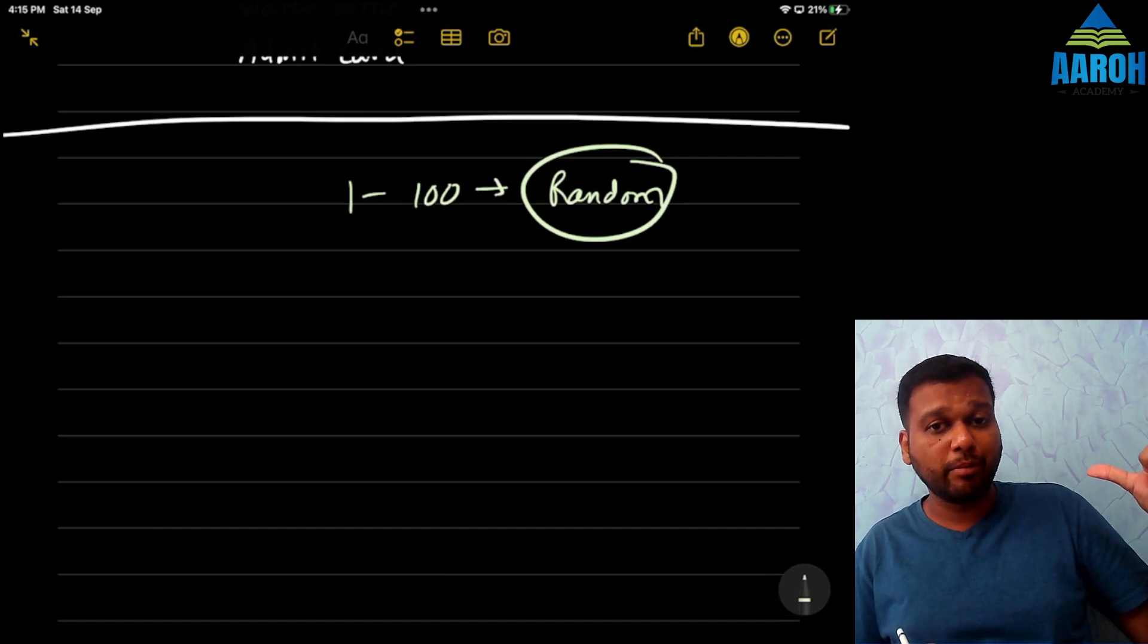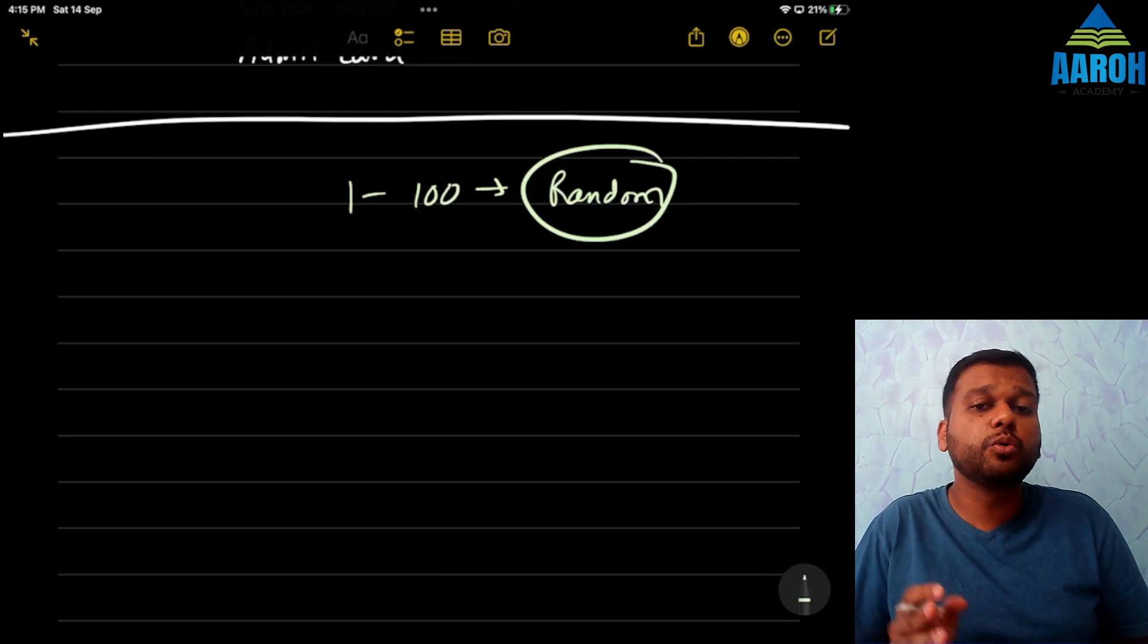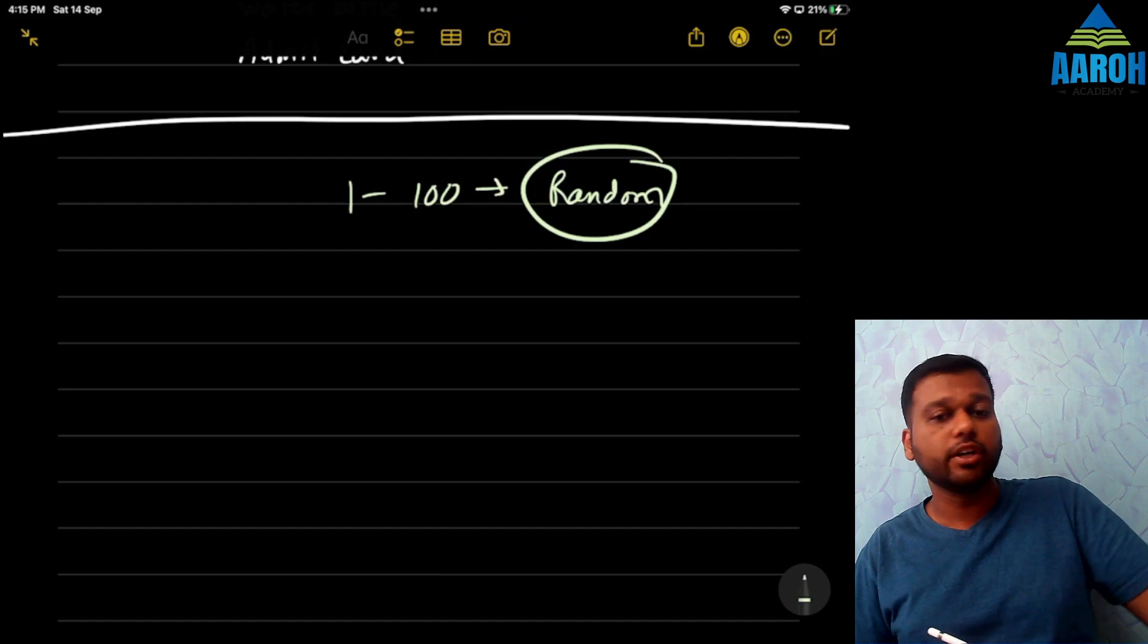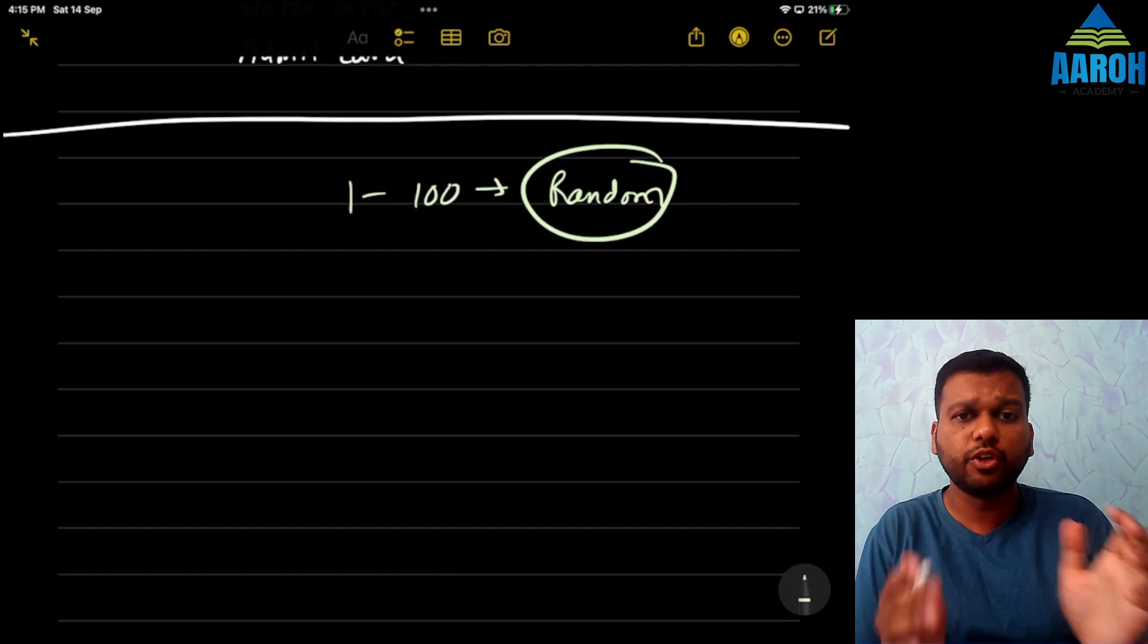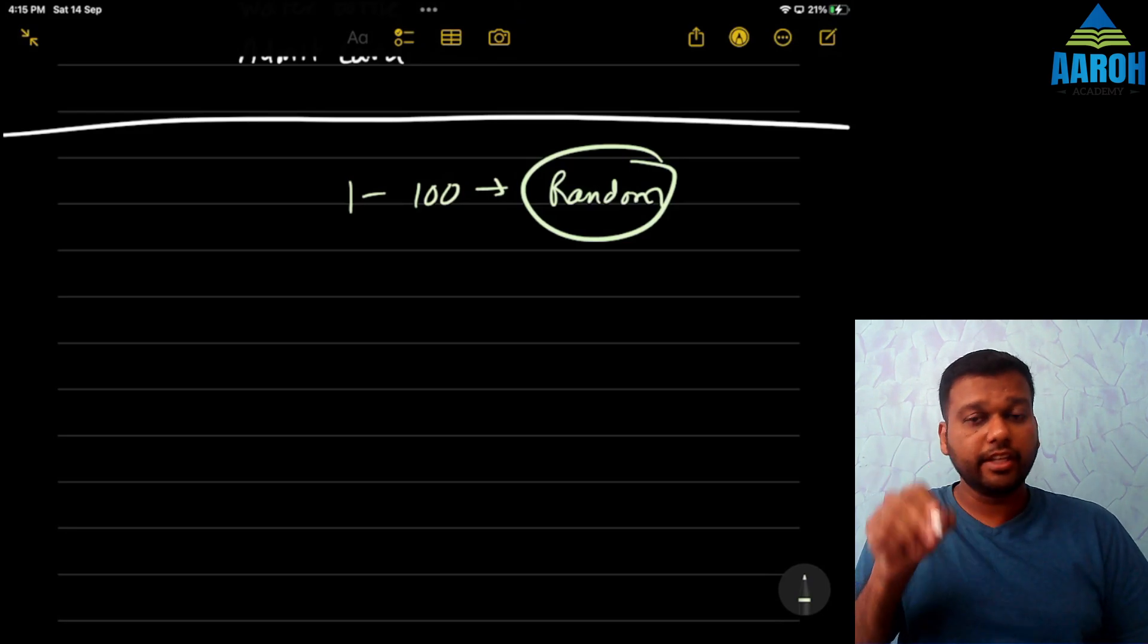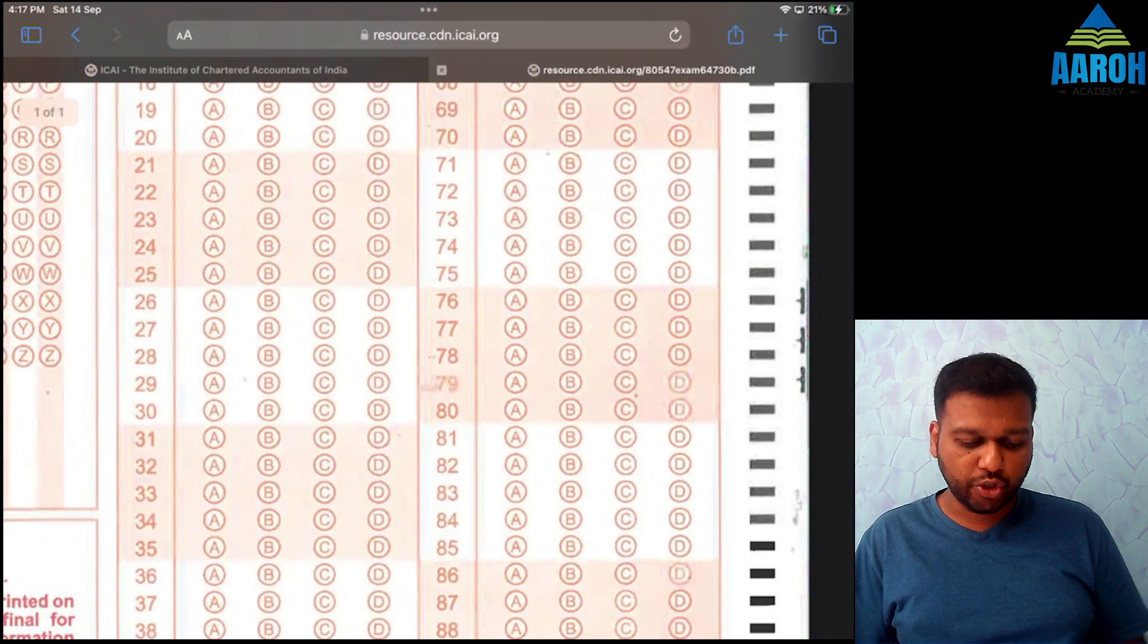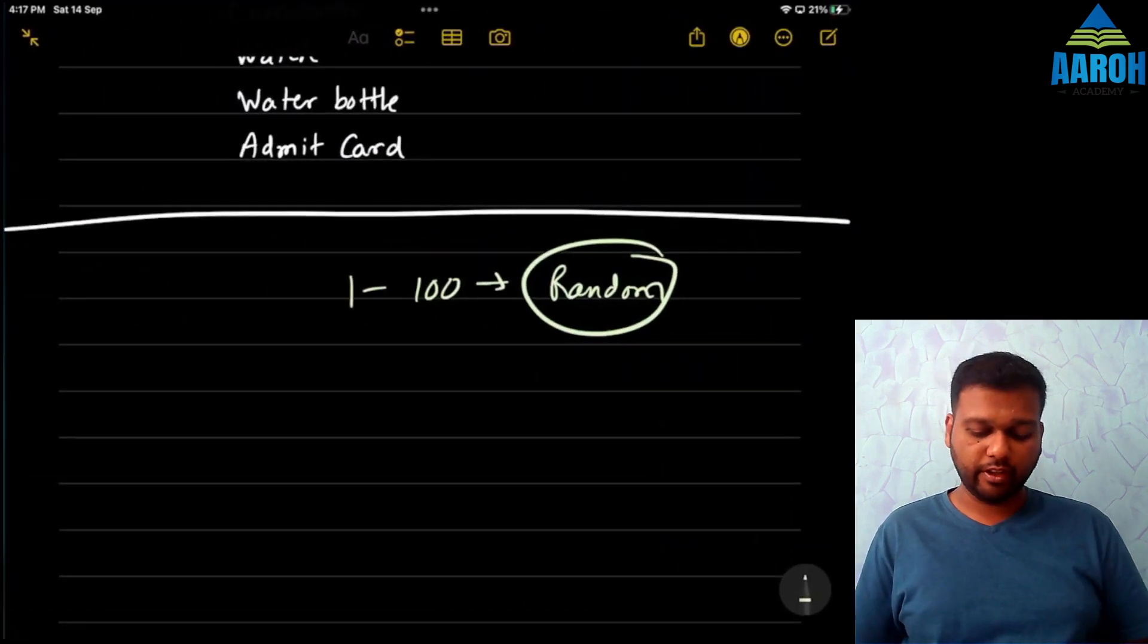If it is random, then apply concept of probability that every question is equally likely. Every question has equal probability of being easy or difficult. So if everything is random, then why go to question 25 directly? Go from 1, 2, 3, 4 in sequence. Do not see what is question 90, what is question 72. Don't do that. Many students do this. They just skip. They feel that this question 25 is easy. Let's solve it. Then this question 52 is easy. Let's solve it. Don't do it. First of all, it will waste time. Second, it might lead to mistakes in marking in your OMR sheet. So don't do that.